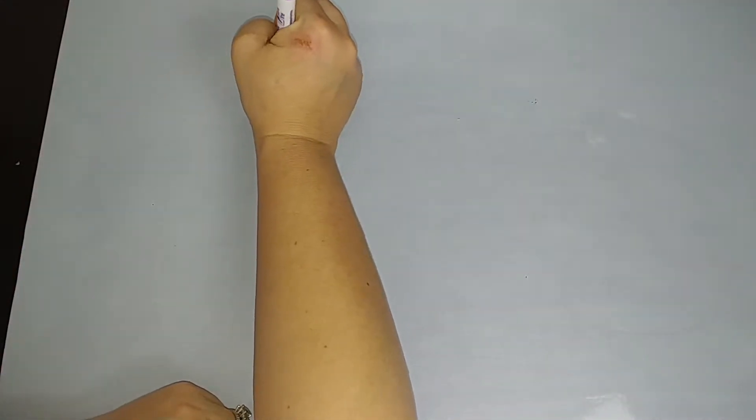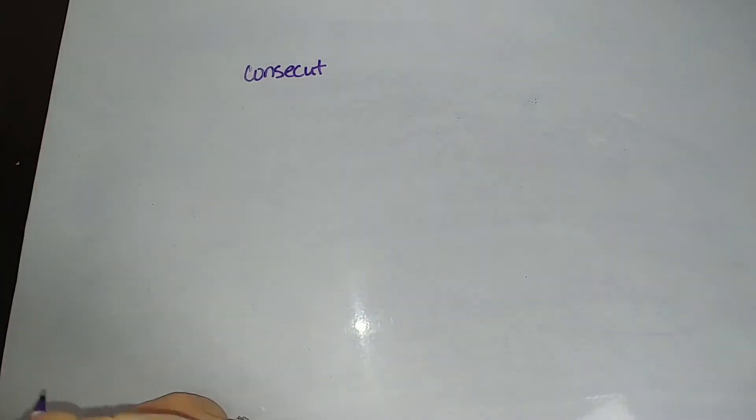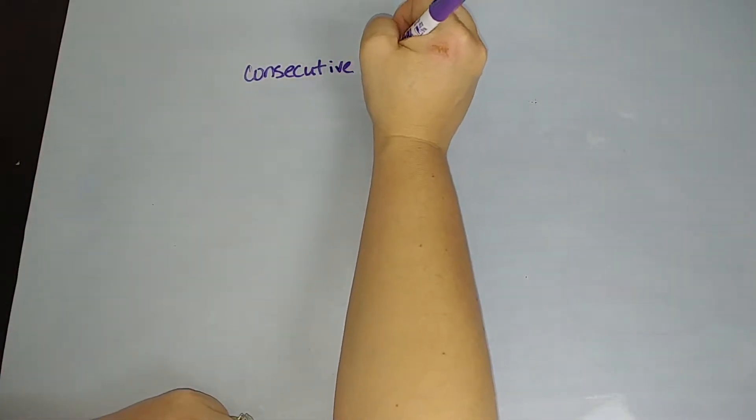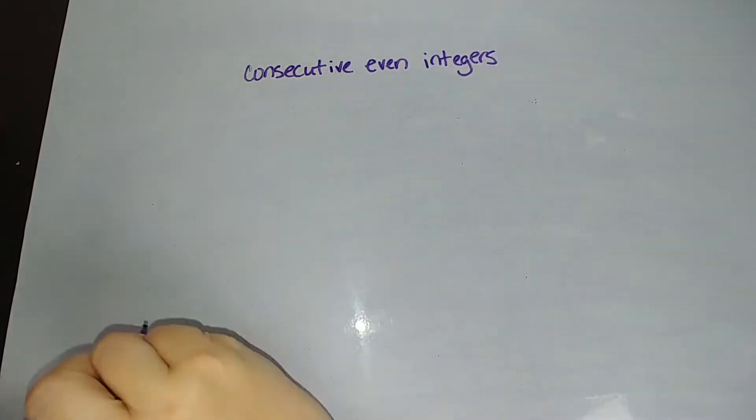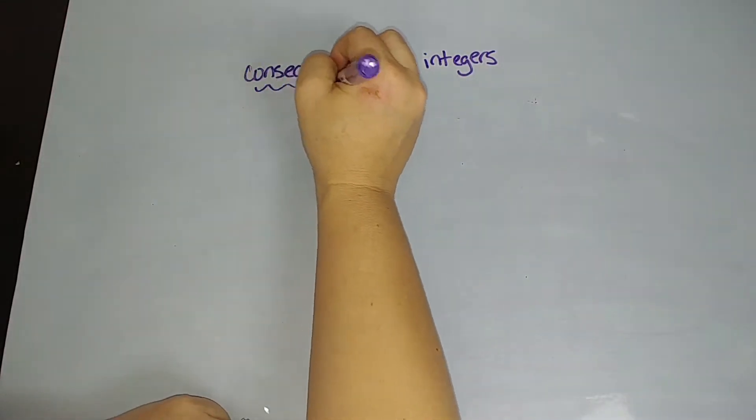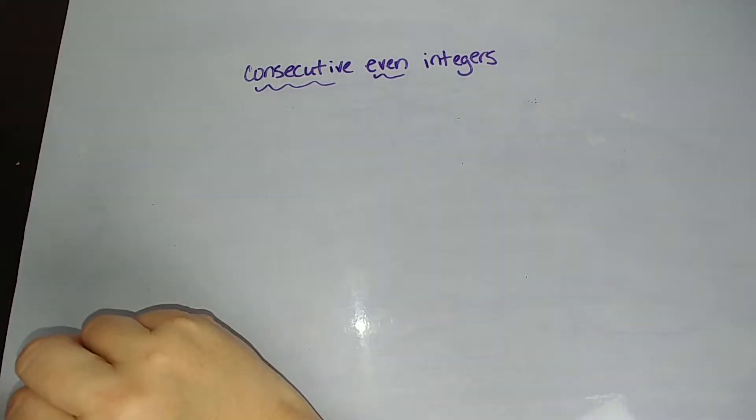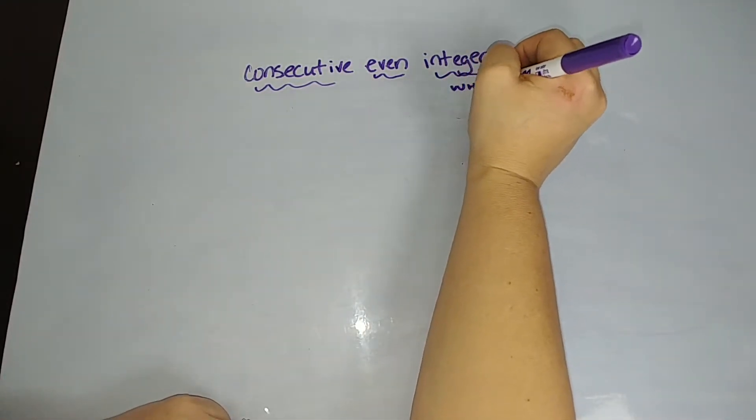If we want consecutive even integers, what do all these words mean? Consecutive means one after another. Even, I think we know what even means. Integers means we're dealing with whole numbers.